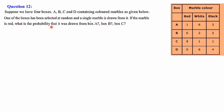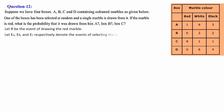This is a reverse probability question, so we must use Bayes' theorem. But here we will go with a different approach. Let R be the event of drawing a red marble. And E_A, E_B and E_C respectively denote the events of selecting box A, box B, and box C.